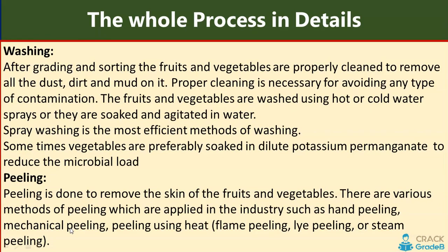Washing: after grading and sorting, fruits and vegetables are properly cleaned to remove dust, mud, and dirt. Proper cleaning is necessary to avoid contamination. They are washed using hot or cold water sprays, or soaked and agitated in water. Spray washing is the most effective method. Vegetables are sometimes preferably soaked in dilute potassium permanganate to reduce microbial load.